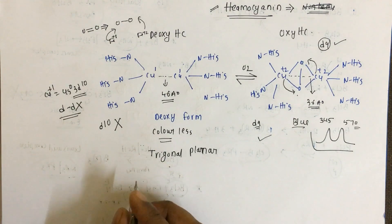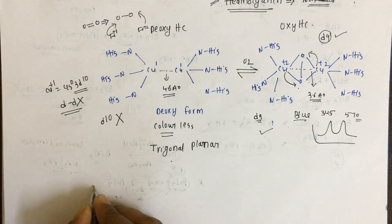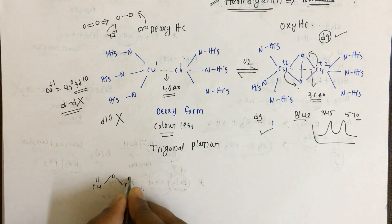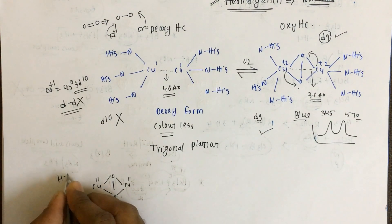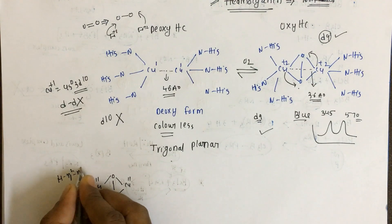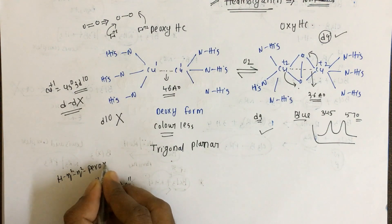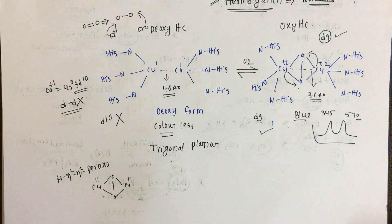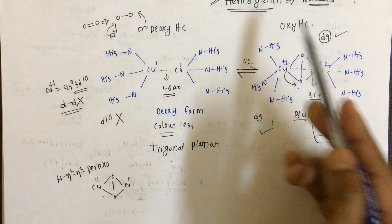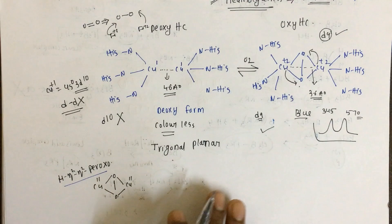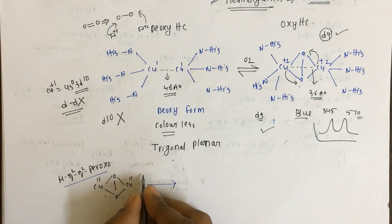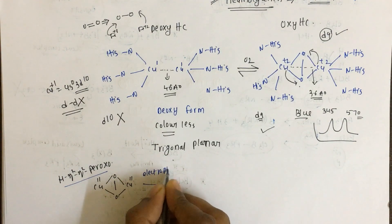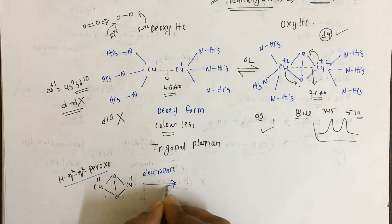One more important thing: the oxy form is called the μ-η2:η2 peroxo form. From an examination point of view, they may ask how oxygen binds in hemocyanin — the answer is the μ-η2:η2 peroxo form. This can undergo electrophilic substitution reactions and exists in equilibrium with another form.